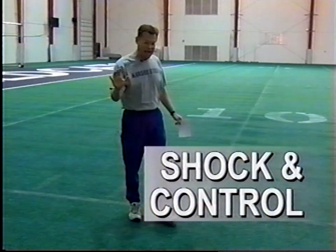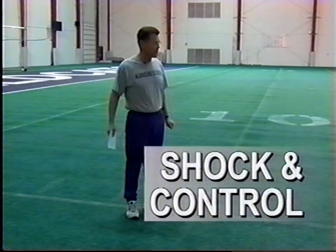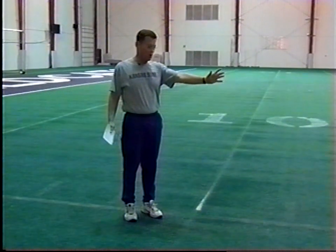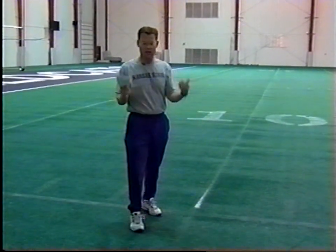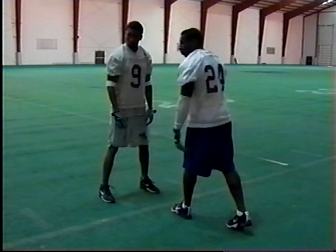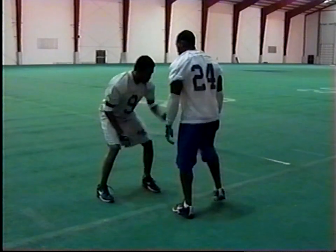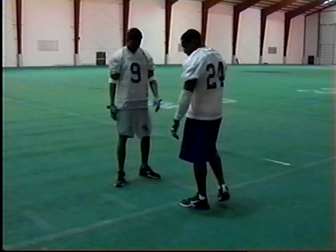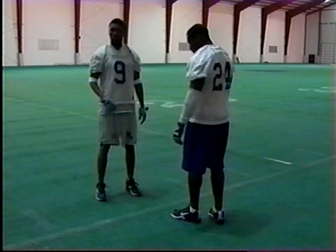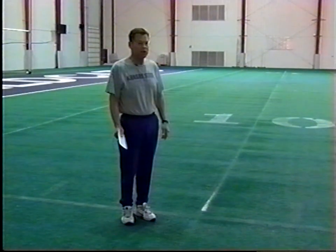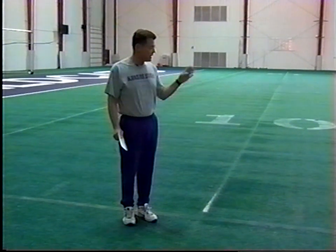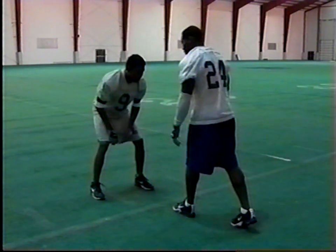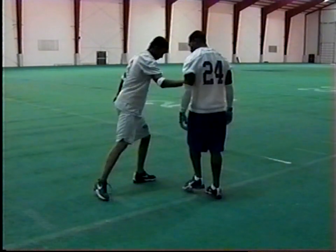We talk about the shock hand and the control hand. The shock hand is the hand in the direction the receiver is going, and all that hand does is keep us in front of the receiver. So if Mo releases outside, Randy slides and shocks with his outside hand. That's just a very brief shock by that hand — it doesn't get a whole lot on him sometimes. After the shock hand, Randy will transfer to the control hand.